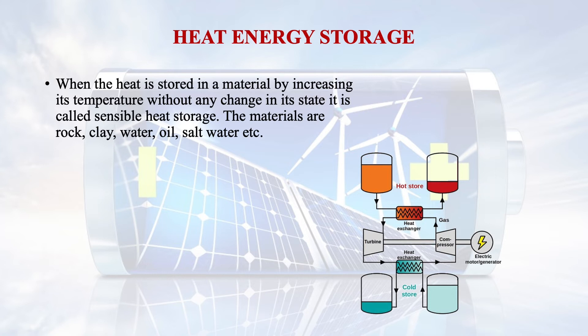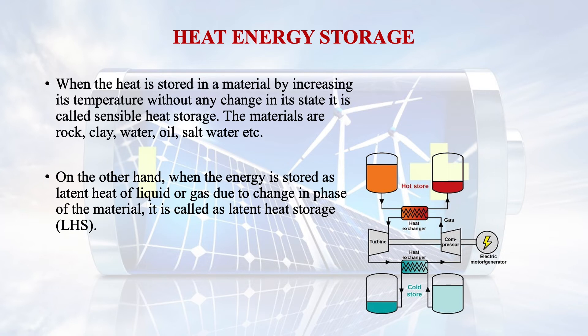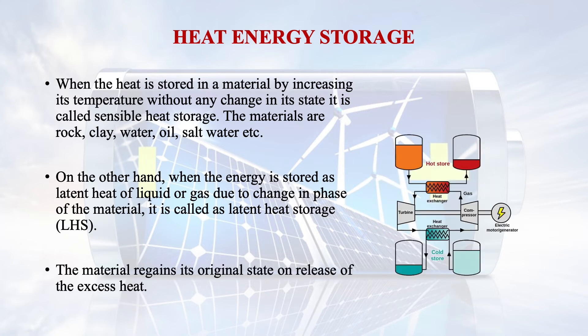The materials used in sensible heat storage include rock, clay, water, oil, salt water, etc. Another system is latent heat storage. In this system, energy is stored as the latent heat of a liquid or gas due to a change in the phase of the material. Materials that regain their original state on release of excess heat are used. Examples include the conversion of water or ice to liquid and back to solid, or the conversion of water to steam and back to water.